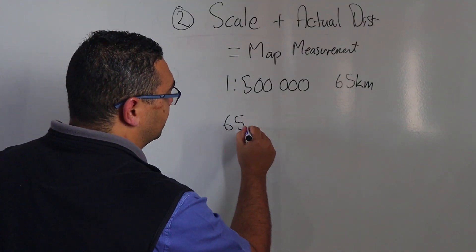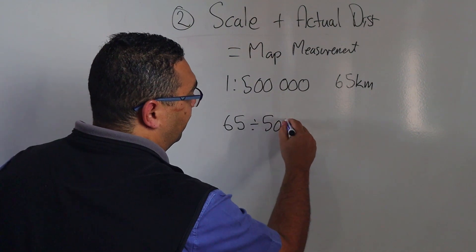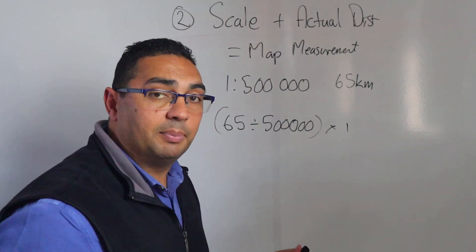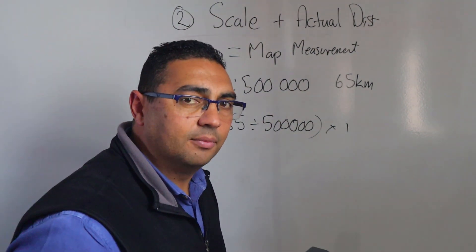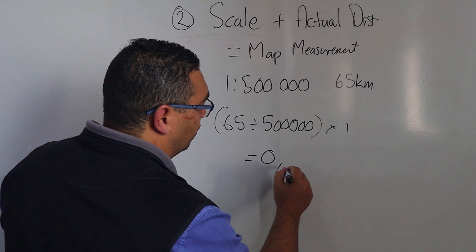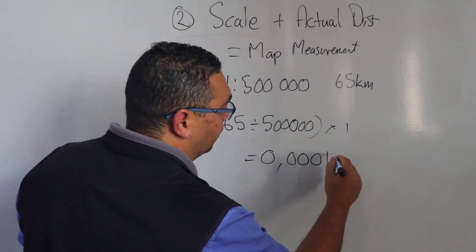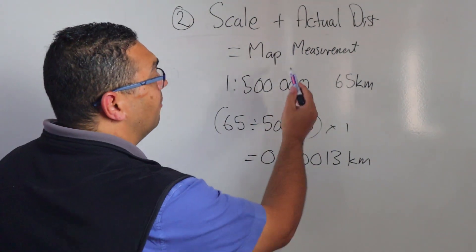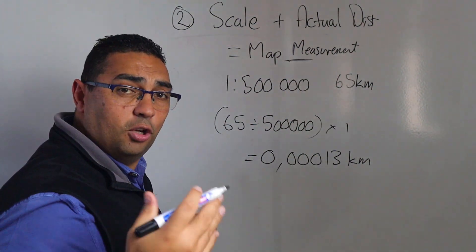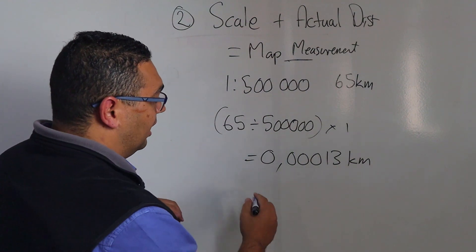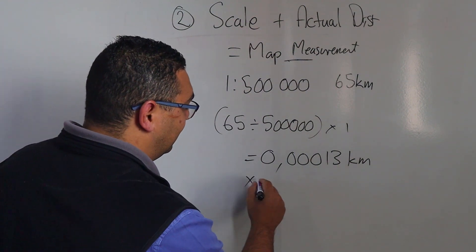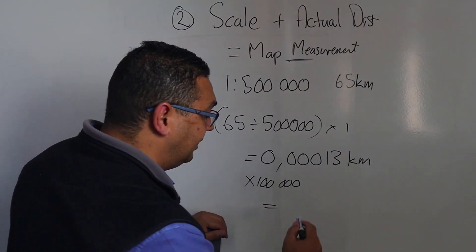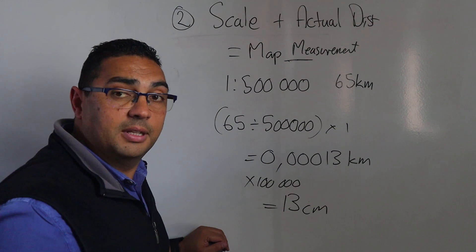This means I'm going to take my 65, I'm going to divide it by 500,000, and then whatever that answer is I'm going to multiply by one. What am I going to get? I'm going to get 0.00013 kilometers, and what am I looking for? I'm looking for map measurement, which means I need to go back to centimeters. So now I need to multiply by a hundred thousand and that's how I end up getting 13 centimeters.